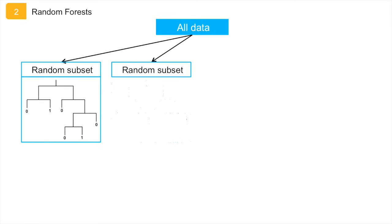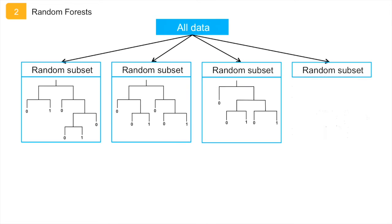The random forest model produces a large number of decision trees using random subsets of the data. These random subsets are selected in a procedure called bagging.